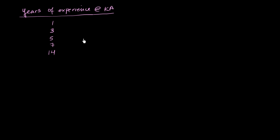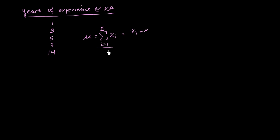What is the population mean for years of experience? We can calculate that. Our mean experience — denoted with mu, because we're talking about the population, this is a parameter — is equal to the sum from data point one all the way to data point five: x1 plus x2 plus x3 plus x4 plus x5, all divided by 5.